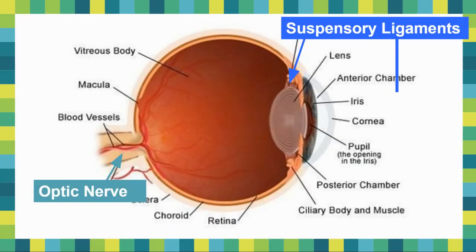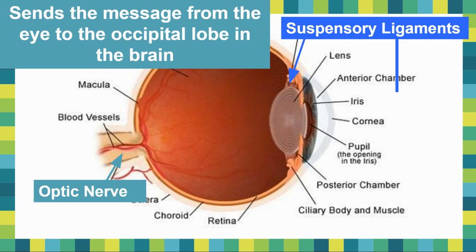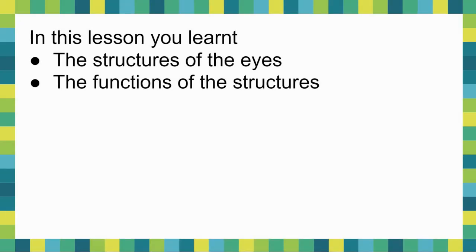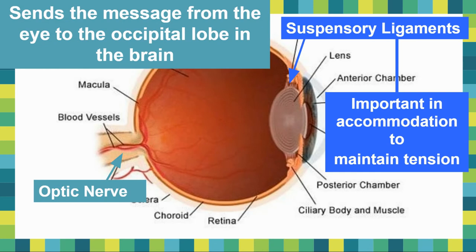The optic nerve sends messages from the eye to the occipital lobe, and the suspensory ligaments are important for accommodation and to maintain tension. The ciliary muscles — and I apologize for forgetting this — are what help move the iris to make it bigger and smaller, which helps the pupil either be larger or smaller.